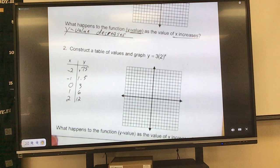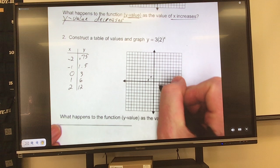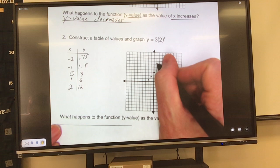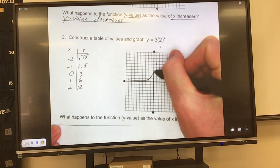Now we're ready to graph it. Over negative 2, up 0.75. Over negative 1, up 1.5. Over 0, up 3. Over 1, up 6. There's 3, 4, 5, 6. And over 2, up 12, which I know is 2 off the graph. And it's going to get close to the x-axis but never touch it. And then it makes its upward trajectory and skyrockets up, which is what you hope your money does in the stock market.